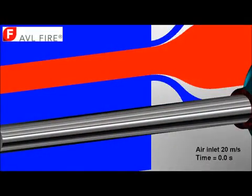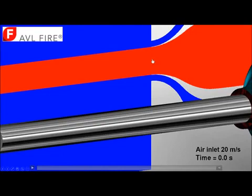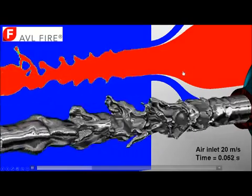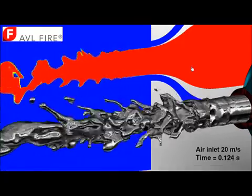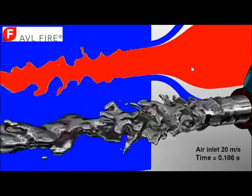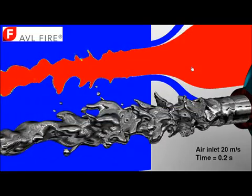I'm going to illustrate this functionality on an air blast injector where the bulk liquid, shown in red, enters at low velocity in the middle, and around it we have a fast-moving air which causes instabilities on the surface, ligament formation, and eventually the separation of droplets. Standard high-pressure break-up models fail to predict such flows because of lower aerodynamic forces acting on the jet and lower turbulence intensity levels.